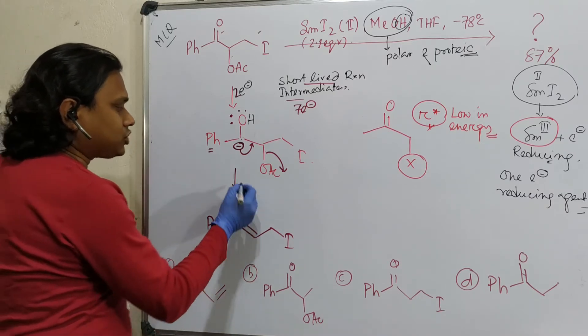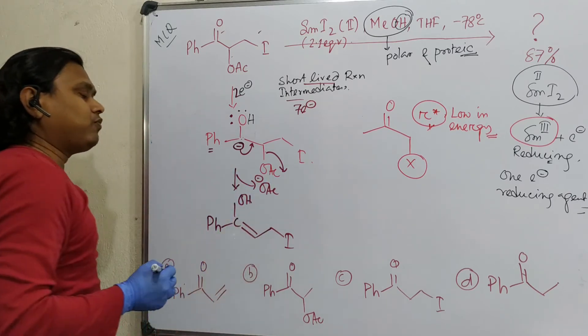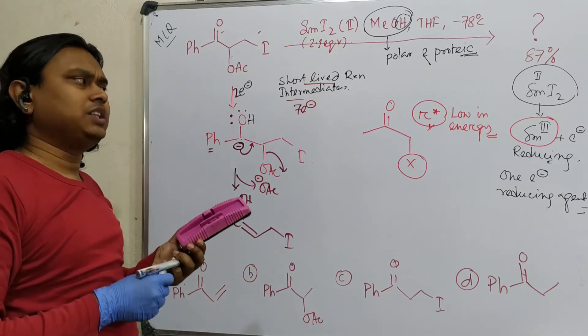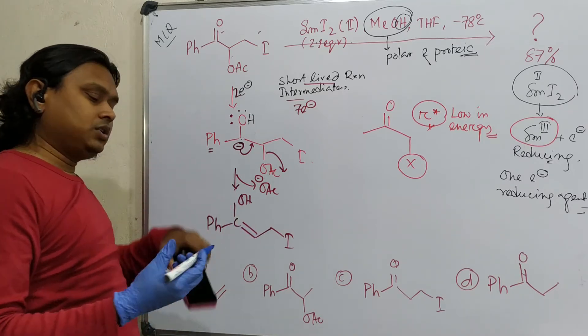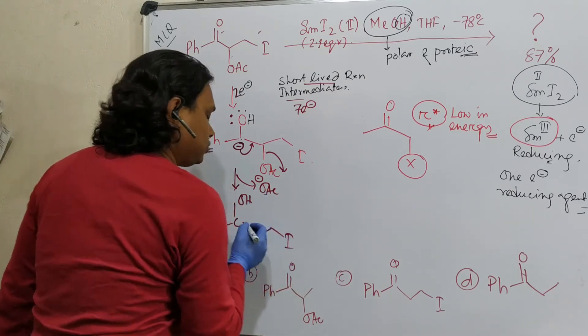So in this way, actually, OAc minus eliminated. And why did this eliminate? Because OAc minus is relatively good leaving group. And by the way, I've already made a dedicated lecture about nature of leaving groups in nucleophilic substitution reactions where you can learn this thing in details.